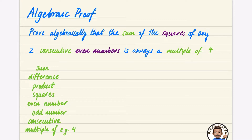First of all, it says we want to prove algebraically that the sum of the squares of any two consecutive even numbers is always a multiple of four. Some of these things are pretty obvious — sum just means adding things together, and squares means you're going to take a number and square it.